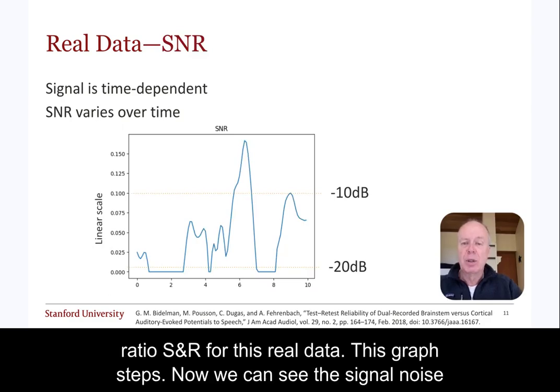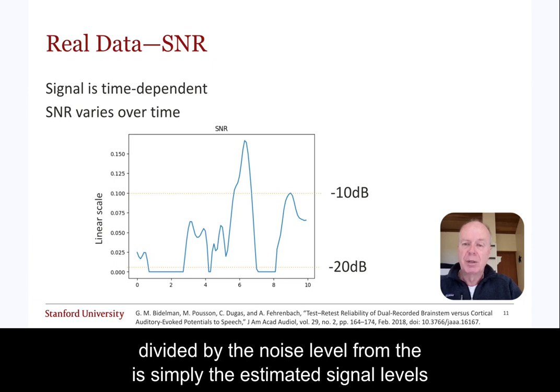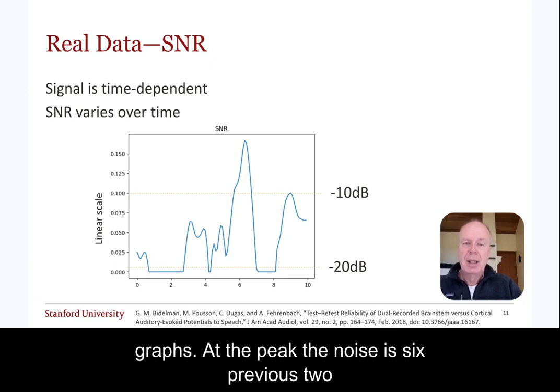Now we can see the signal-to-noise ratio, SNR, for this real data. This graph is simply the estimated signal levels divided by the noise level from the previous two graphs. At the peak, the noise is six times bigger than the signal.